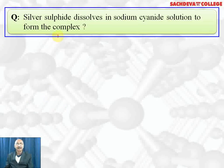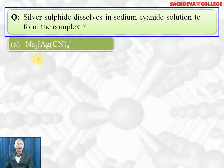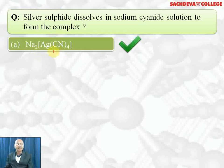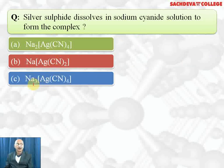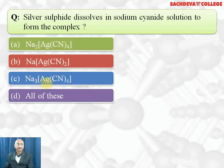Silver sulfide dissolves in sodium cyanide solution to form the complex sodium dicyano argentate(I). Correct answer is B part. It is sodium dicyano argentate(I). Coordination number of silver is 2 because it is larger in size.